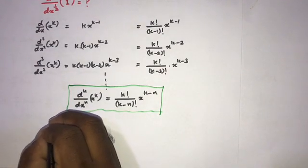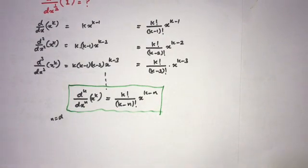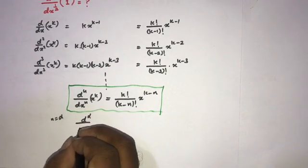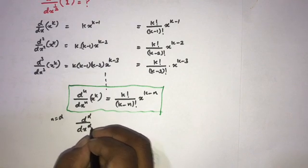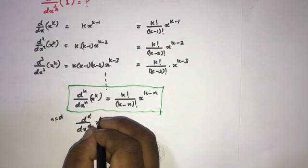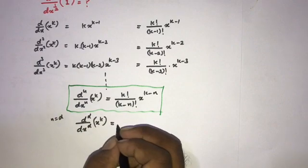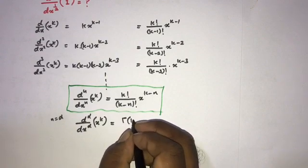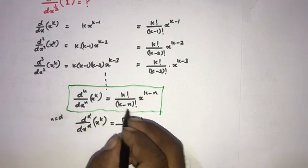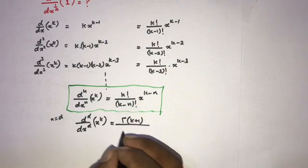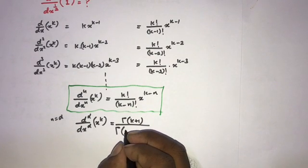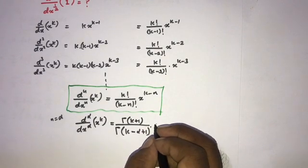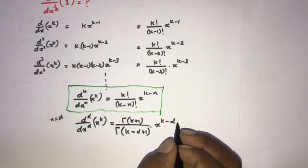If we take n equal to alpha, we can write the alpha-order derivative: d alpha over dx to the alpha of x to the k is equal to gamma of k plus 1 over gamma of k minus alpha plus 1 times x to the k minus alpha, where alpha can be any fractional value.